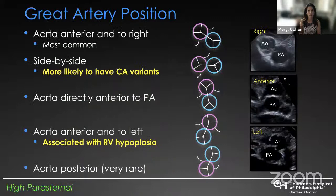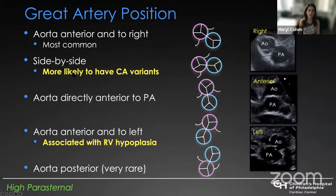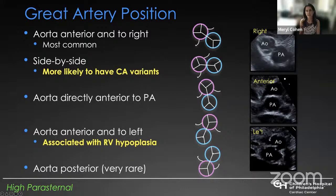I want to draw your attention to the variable great artery position in transposition. The most common is the aorta being anterior and to the right. We will often see side-by-side great arteries, and you're more likely to have coronary artery variants when the great arteries are side-by-side. The aorta can be directly anterior to the pulmonary artery — in Von Praegen terms we use the letter A in that situation, and D for aorta anterior and to the right. If the aorta is anterior and to the left, that's rarer and often associated with right ventricular hypoplasia — we call that SDL.